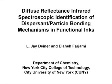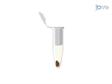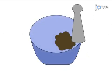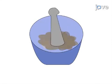The overall goal of this procedure is to identify the dispersant molecules adsorbed on dispersed particles within colloidal dispersions. This is accomplished by first centrifuging the colloidal solution to separate the particles from dispersant. Next, the isolated particles are washed with solvents, recovered with centrifugation, and oven dried. The dried sediment is then mixed within a potassium bromide matrix and ground into a fine powder.